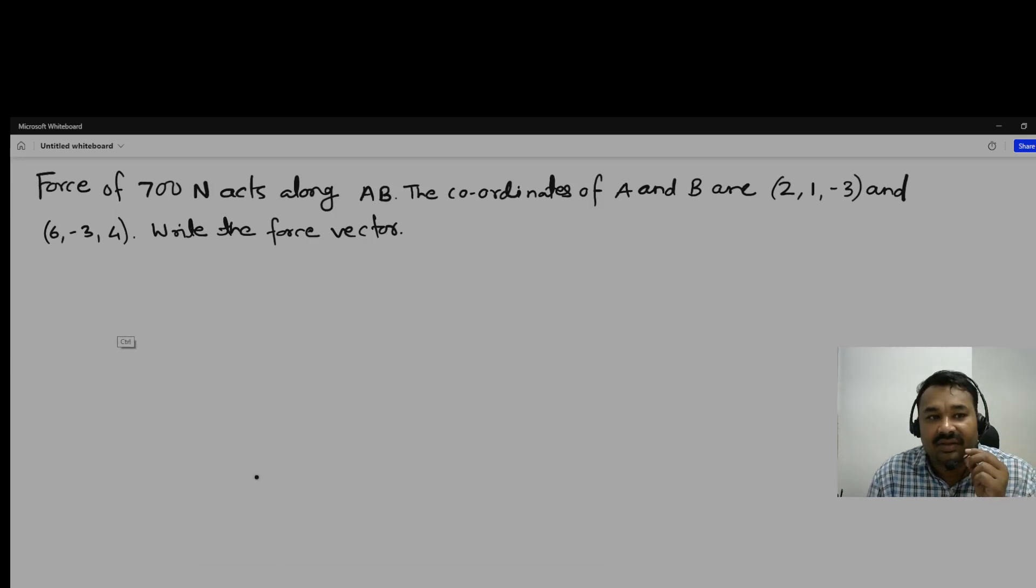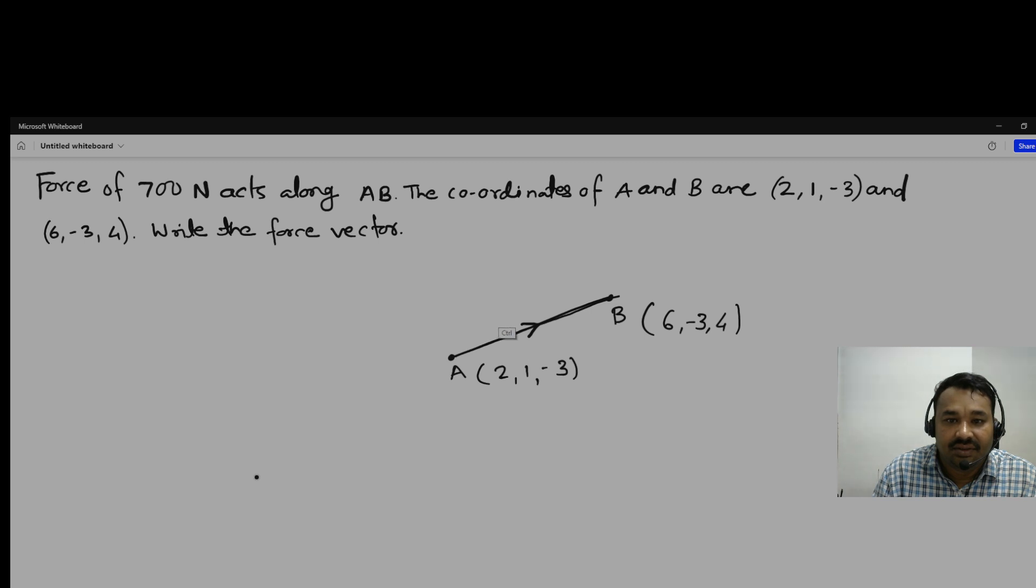So dear friends, suppose we have a magnitude of force and two points are there. This is one point A and this is B, and the coordinates are given: A(2, 1, -3) and B(6, -3, 4). This is the direction of force with magnitude 700 Newton.